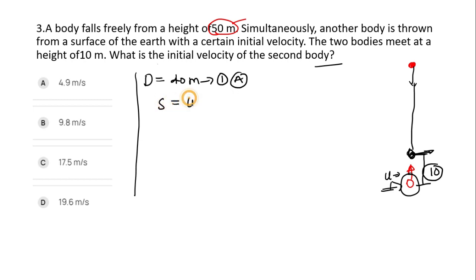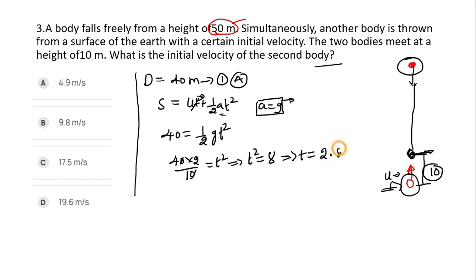We know that total displacement is equals to 40 meters for the first ball. I know that displacement s equals ut plus half at square. But here ut is zero because it's a freely falling body, so s equals half gt square. Here s equals 40, so 40 equals half times g times t square. If I simplify this, I will get 40 times 2 divided by 10 equals t square. So t square equals 8, which means t equals 2.85 seconds.